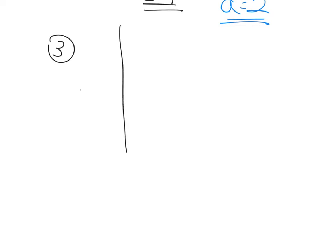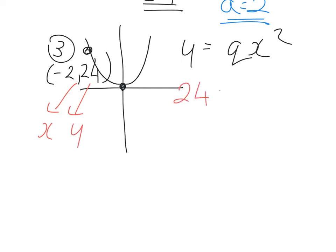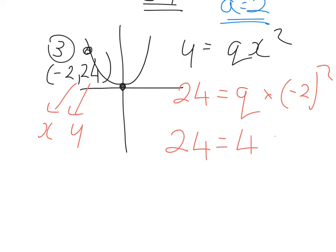Question 3 — similar again. We pass through the point (-2, 24) and it's y equals qx squared; find q. When x equals -2, y equals 24. Substituting: 24 equals q times (-2) squared. Be careful — when you square -2 that gives you 4, so 24 equals 4q, q equals 24 divided by 4, and q is equal to 6.